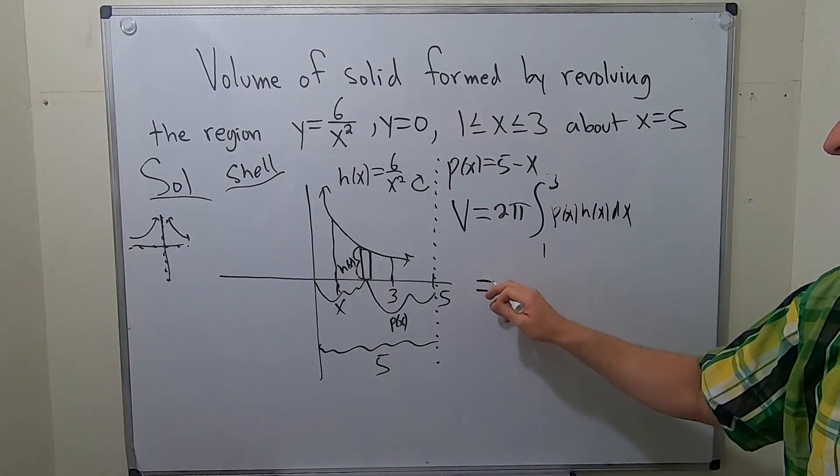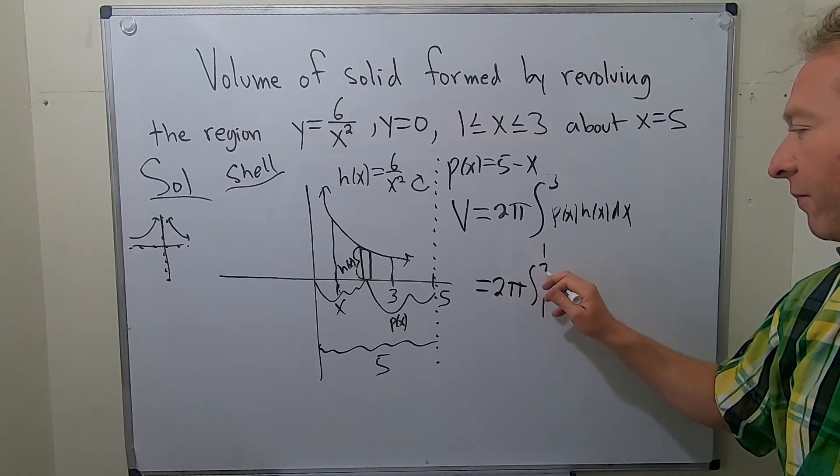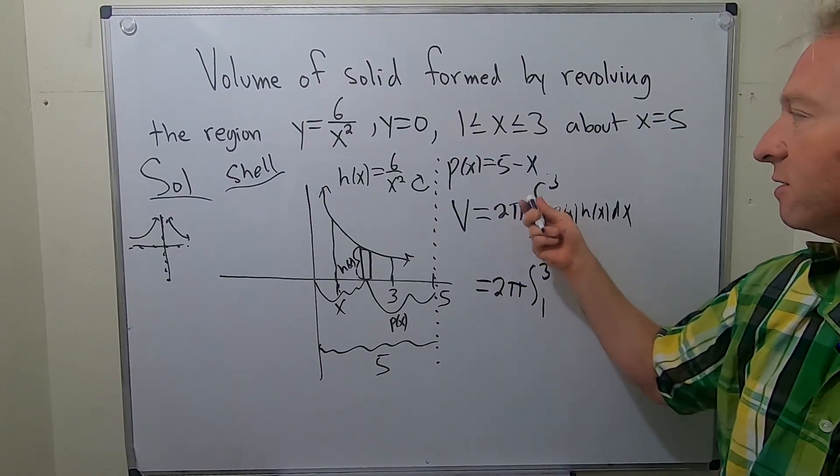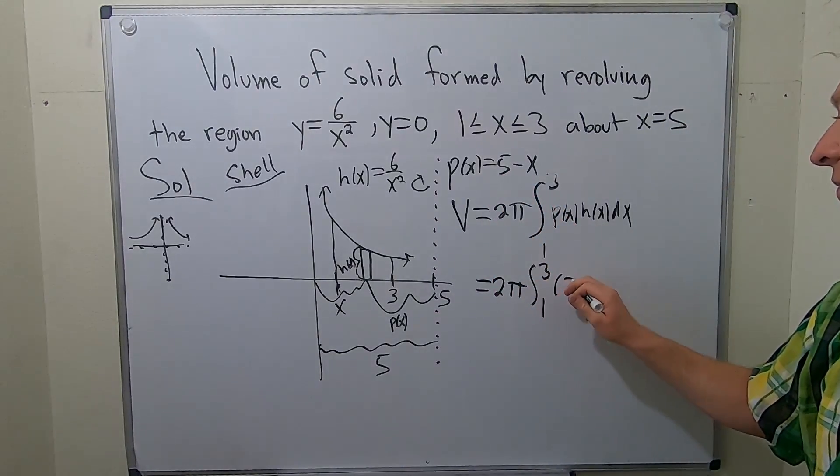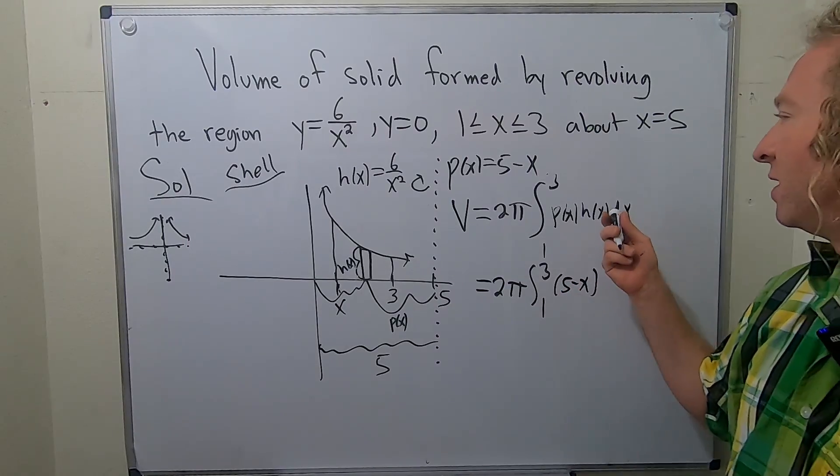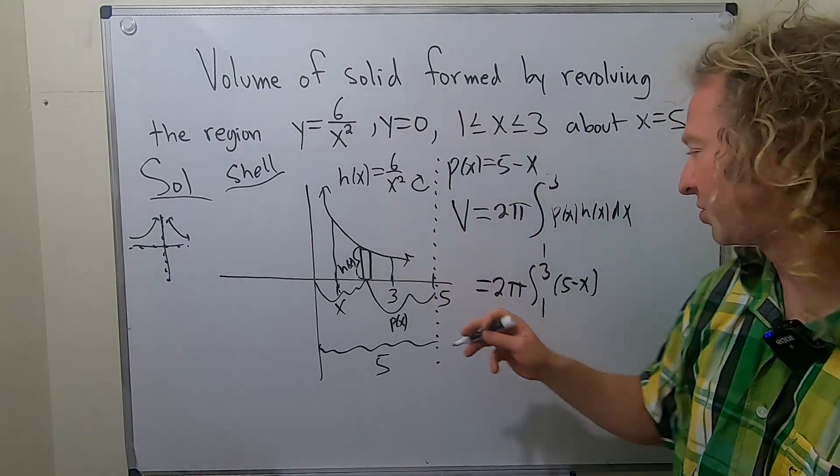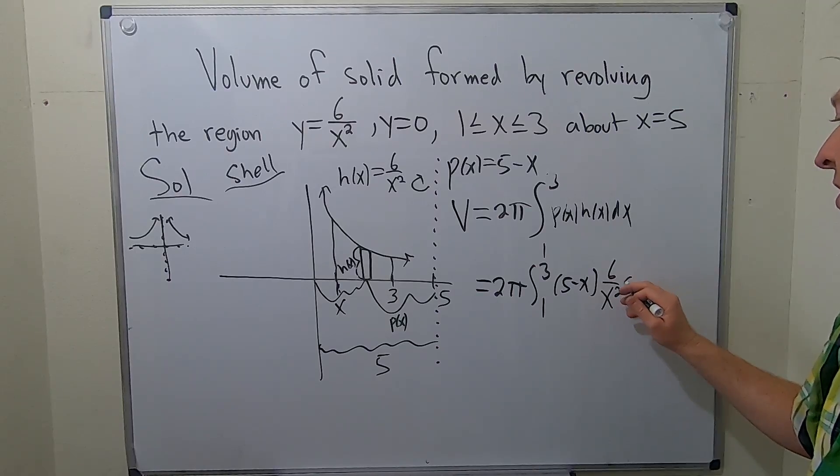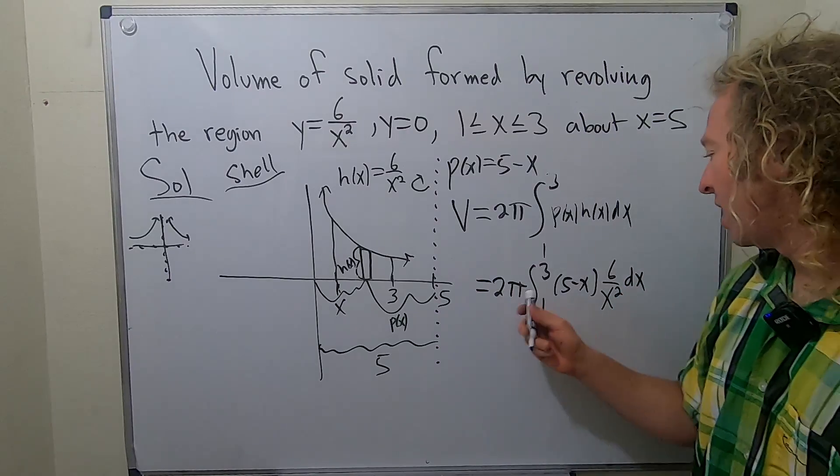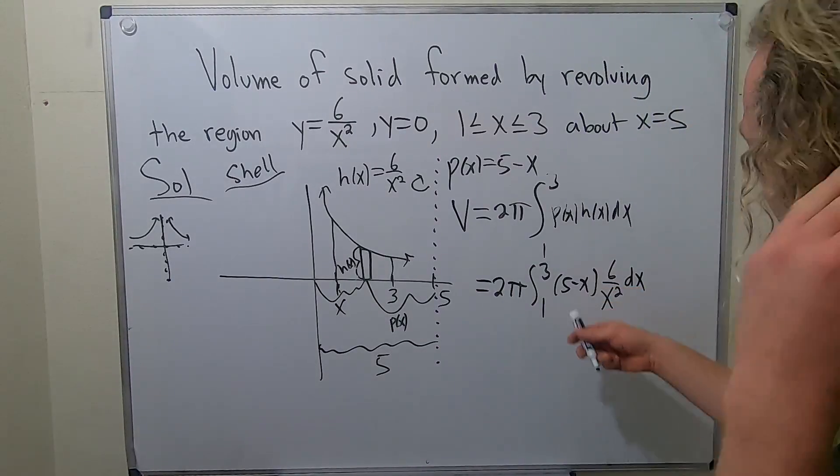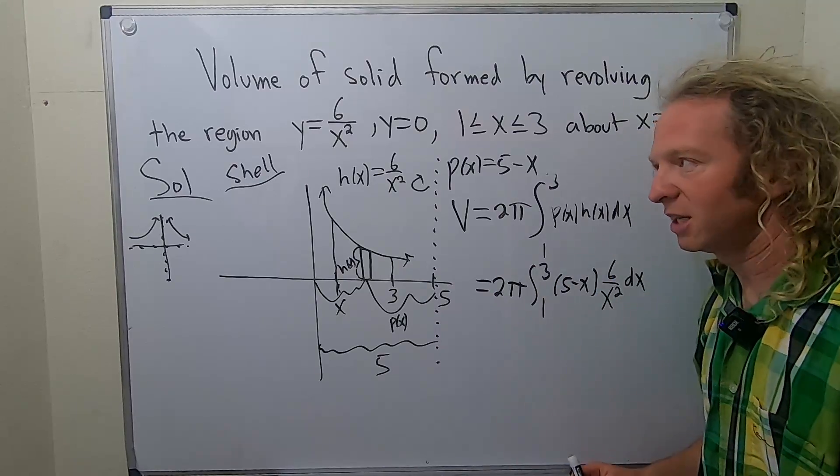This will be equal to two pi, integral from one to three, and p here is five minus x. And then h here is six over x squared. And then we have a dx.